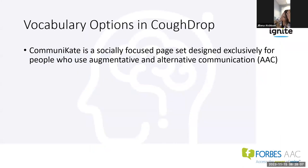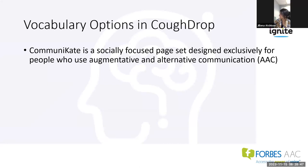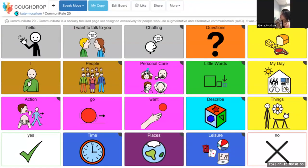Communicate is a socially focused vocabulary set designed exclusively for people who use augmentative and alternative communication. It was designed to be easily used in conjunction with a low-tech communication book, and as a progression from a book to a dynamic display device. Communicate is designed for people who rely heavily on the environment or context to communicate effectively, but understand concepts and language used in conversation and during everyday activities. It supports emerging literacy skills and enhances comprehension by using photographs and symbols to represent language. Communicate was designed by Kate McClellan, a speech therapist.